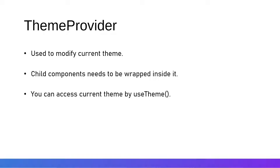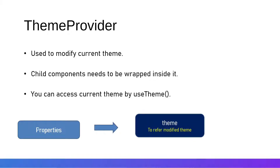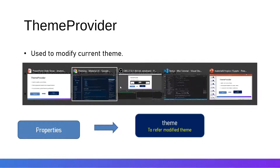The main property of ThemeProvider is the theme prop, which refers to the modified theme. In the theme variable, we create a new theme, modify some things, and then pass it as a prop inside the ThemeProvider to use the modified theme. This is the relation between the theme and the ThemeProvider.